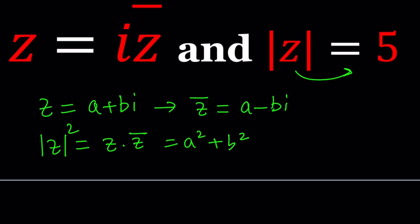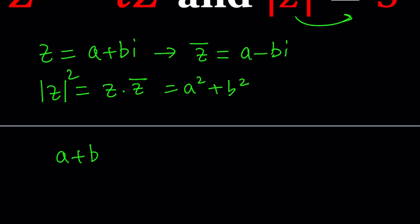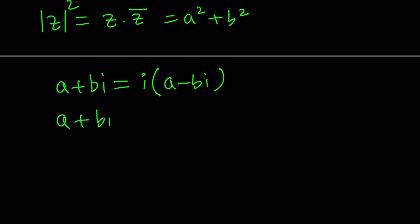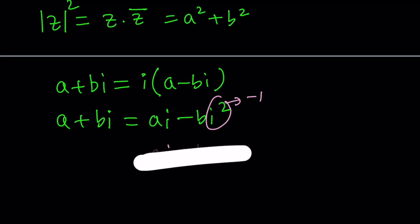Now we're going to plug in everything and solve for z or a and b. Replace z with a plus bi, and z bar is going to be a minus bi. Let's work on this equation first. Let's distribute. We get ai minus bi squared. Remember, anytime you see i squared, you can replace it with negative one. So this becomes ai plus b, or b plus ai, which is better because it's in standard form.